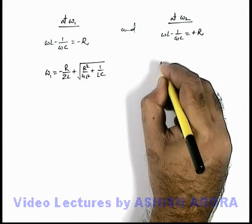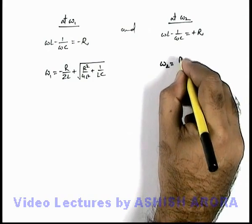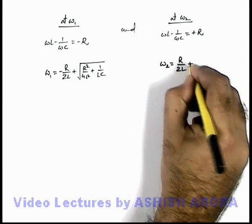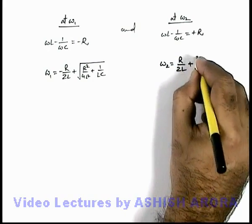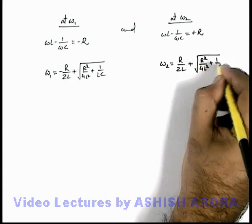Similarly, here on solving the quadratic, you'll get the value of omega 2 is equal to R by 2L plus root of R square by 4L square plus 1 by LC.